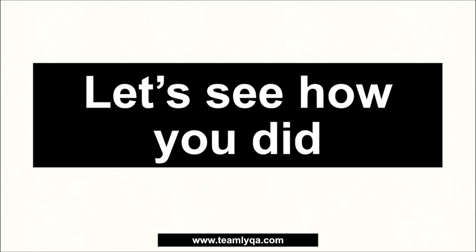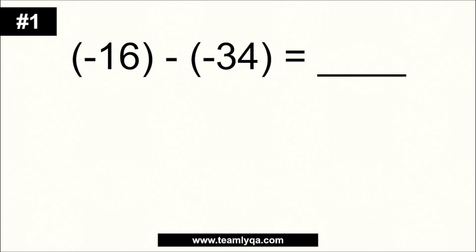Alright, let's see how you did. Let's start with the first one: negative 16 minus negative 34. Change the operation to addition, and then change the sign of the second number so it becomes positive. Now you have negative 16 plus positive 34. Since the signs differ, subtract: 34 minus 16 is 18. Copy the sign of the bigger number — positive — so the answer is positive 18.